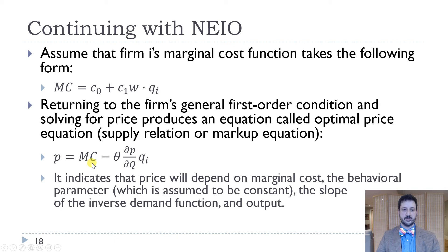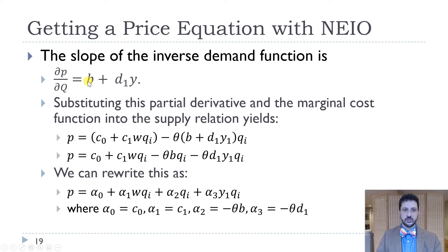If we think about the first order condition, P equals MC minus theta times DP, DQ, QI, then price depends on marginal cost, the behavioral parameter, and then the slope of the inverse demand function. We're going to estimate these things with the equations that we just talked about. The slope of the inverse demand function is just B plus D1Y. Substituting that partial derivative and the marginal cost function into the supply relation, we get our second equation here: P equals C0 plus C1WQI minus theta BQI minus theta D1Y1QI.